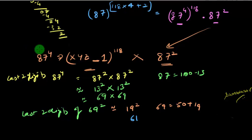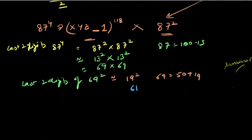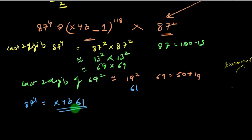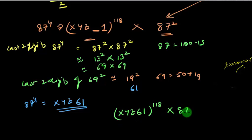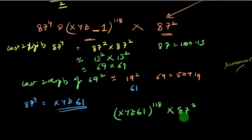So 87 raised to the power 4 is some number xyz...61. Now the full expression becomes xyz...61 raised to the power 118, multiplied by 87 raised to the power 2. The last 2 digits of 87 squared — which we already found — are 69. So last 2 digits of 87^2 is 69.